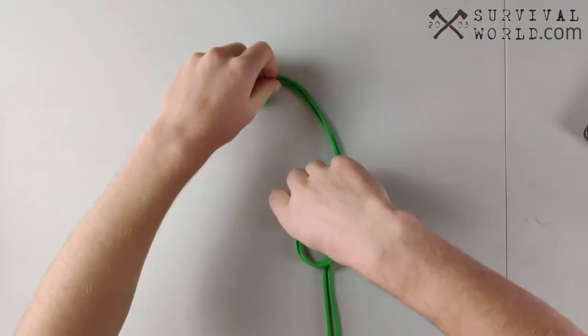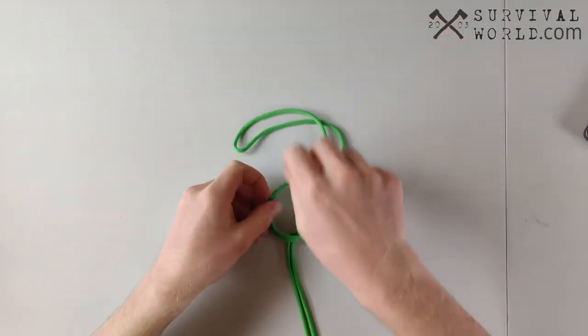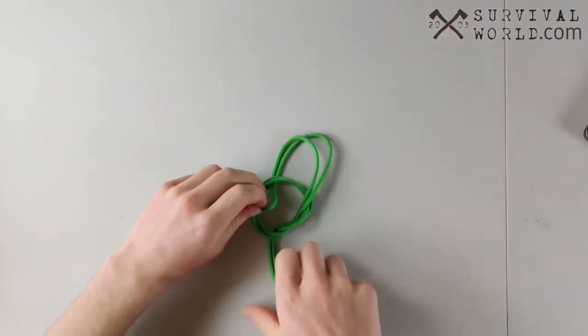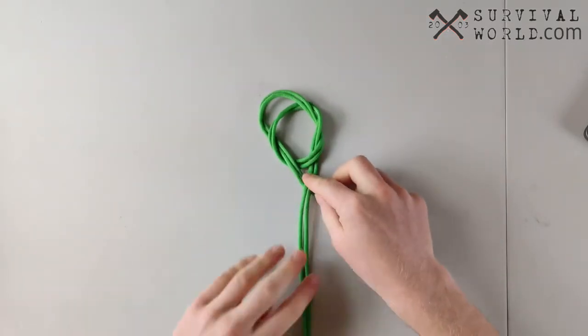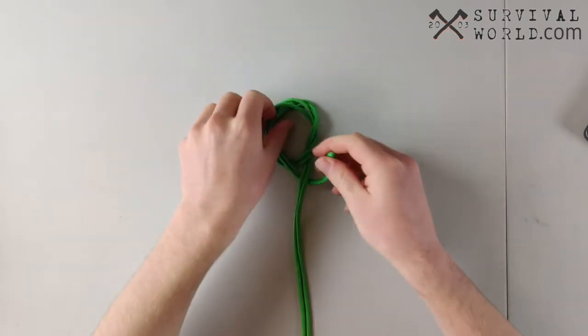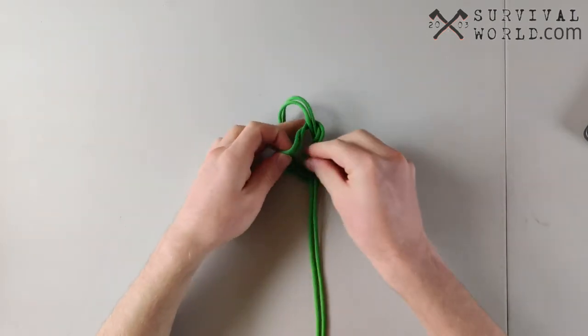Now we're going to wrap it around and from the back we're going to stick it up and through that overhand loop. Wrap it around our trailing ends of our line here, and then with that very first original loop we're going to stick it through there.